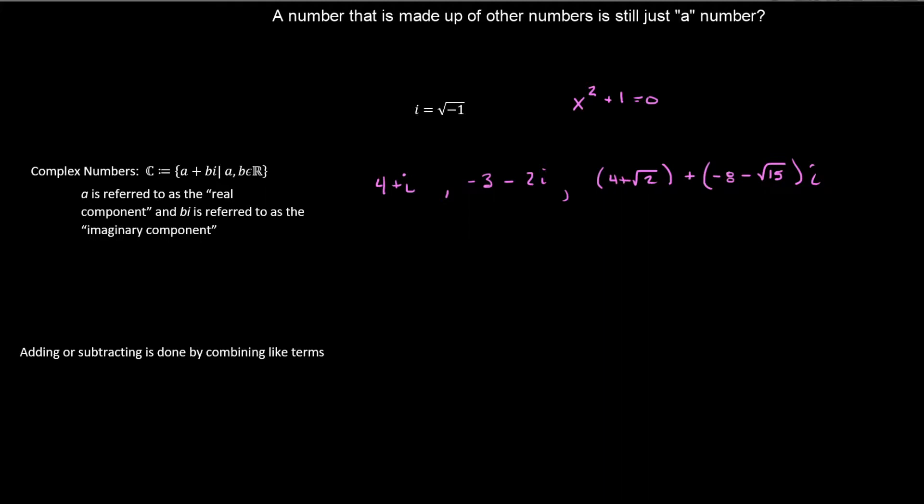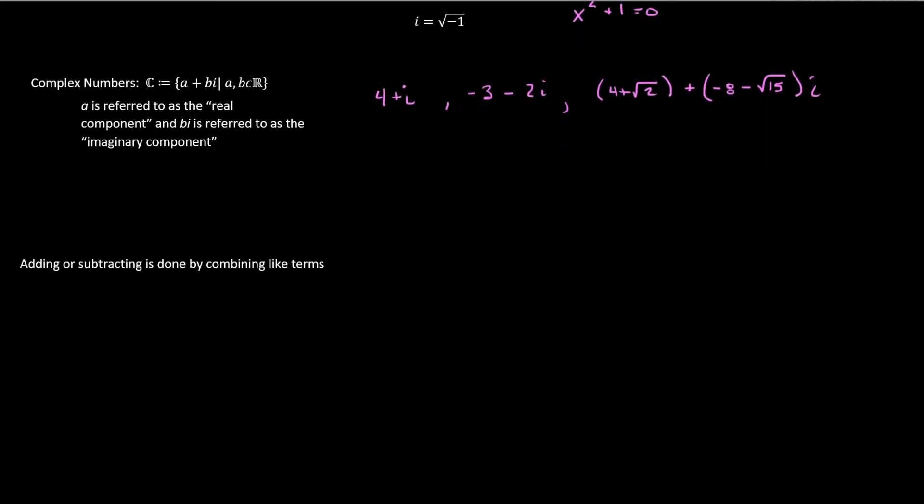So the two components, 4 plus root 2, is the real component. And then the negative 8 minus root 15 is the imaginary component. So it still follows the structure, it just doesn't look very nice. But it doesn't have to, and that's the wonderful thing about it. We don't have to like the math that we get. We just have to know that it's true.